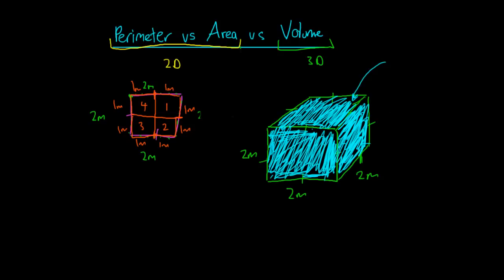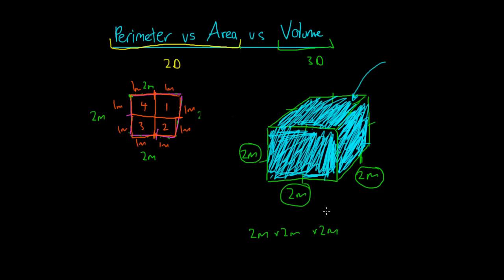Volume is a three-dimensional measurement because it measures not only how high and how wide the cube is, but also how deep it is. Volume is the total space that the cube takes up. When talking about volume, it has its own units. With two-dimensional shapes we had metres and metres squared. For volume, we have a height, a width, and a depth — so the volume of this cube is two metres times two metres times two metres, which gives us eight, and metres times metres times metres gives us metres cubed. So when talking about volume, we deal in metres cubed.